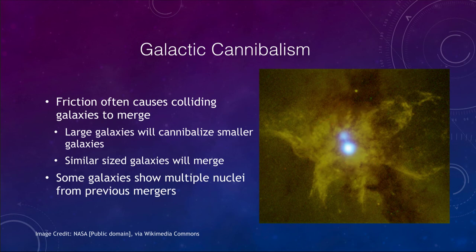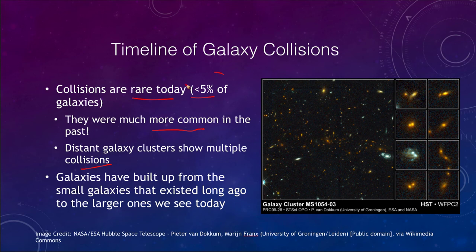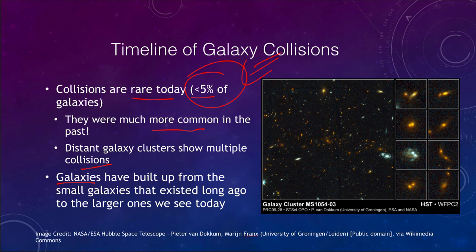What kind of timeline do we have? Galaxy collisions today are relatively rare — about 5% of galaxies — so most galaxies are not currently colliding. However, they were much more common in the past. Distant galaxy clusters show multiple collisions, far more than the 5% we count today, sometimes with multiple galaxies colliding at the same time. This process has built up the galaxies we see today — the great spirals and ellipticals — all formed from smaller galaxies that existed long ago and slowly merged through collision and cannibalization.